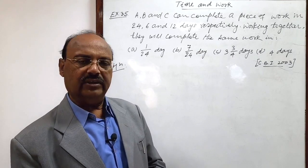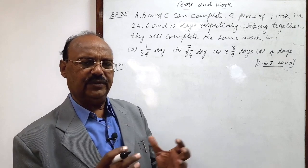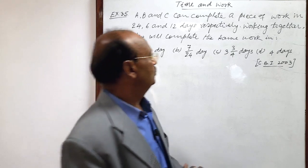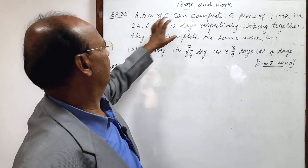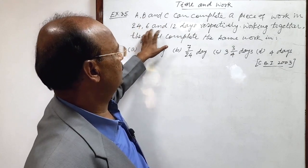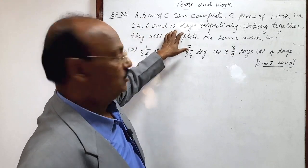Our calculations should be very crispy, very short. You see number of days of completion of the work by A, B and C is given here 24, 6 and 12.